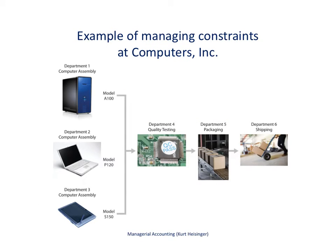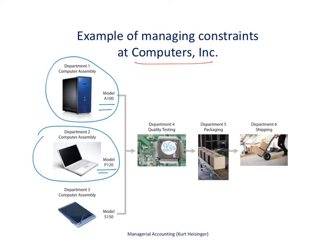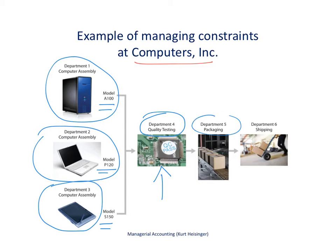Here's an example of how best to manage constraints. Our company is called Computers Inc., and we make three different models: a desktop computer (model A100), a desktop (model P120), and tablets (model S150). As these products are produced and assembled, they are forwarded to the quality testing department. This is where we have a bottleneck, which is slowing the flow to department five for packaging and shipping.